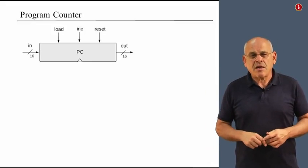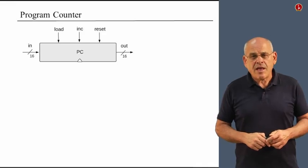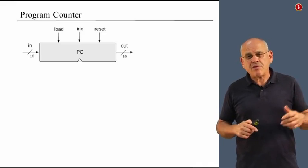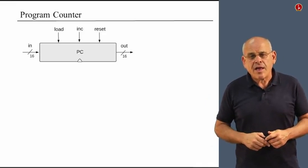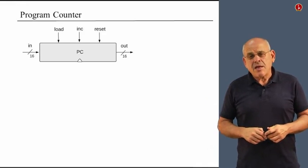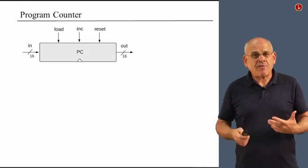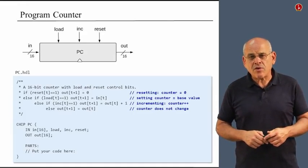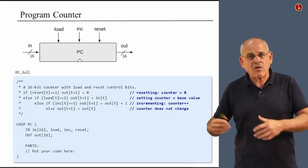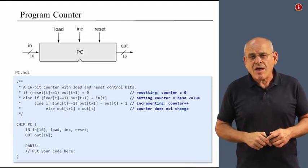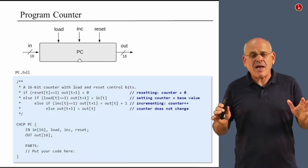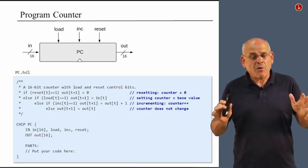But effectively, it's just a counter. It has an input value, it has an output value, and three control bits. Now, the overall behavior of this counter is somewhat elaborate. We discussed it when we talked about counters before. I want just to emphasize the four most important things about it.